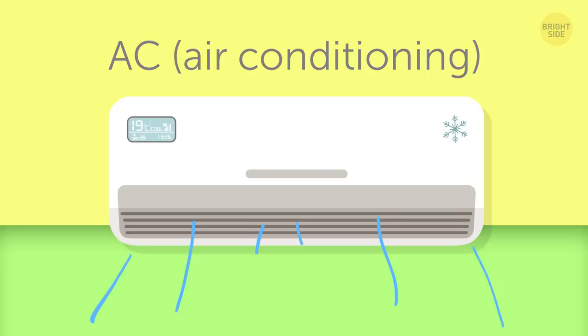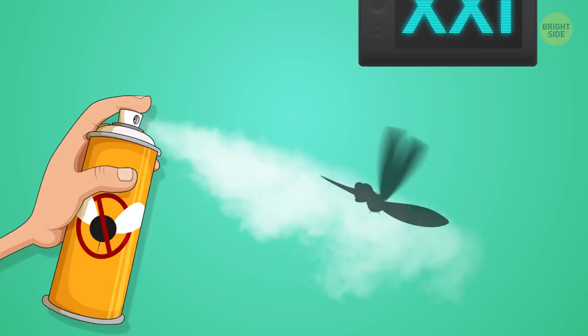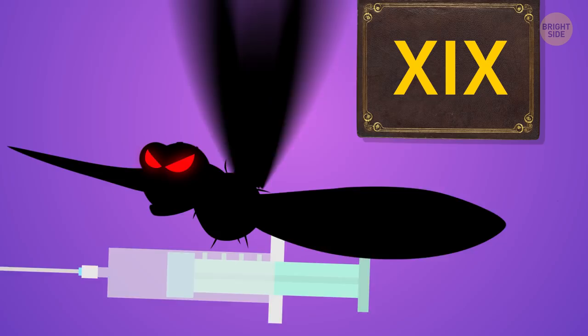Believe it or not, but you have to thank mosquitoes for the invention of air conditioning, or at least its forefather. Nobody loved them in the 21st century, but back in the 19th century, those guys were a real nightmare. They carried around different infections, such as malaria.